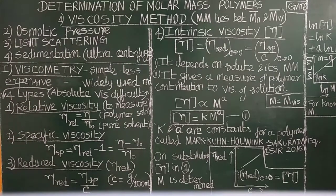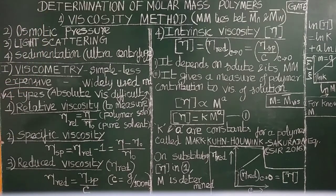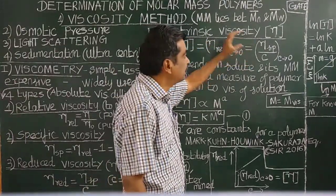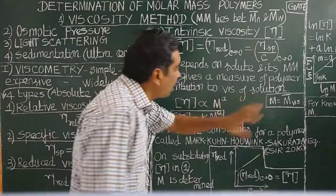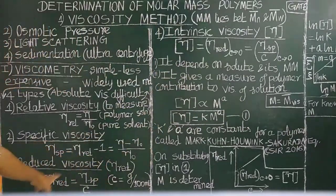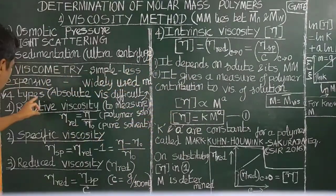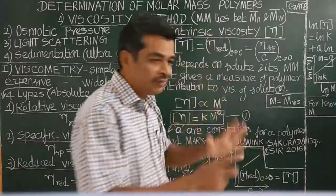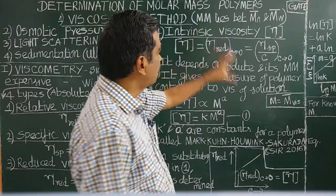What are the four types of viscosities? Relative viscosity, specific viscosity, reduced viscosity, and intrinsic viscosity. This intrinsic viscosity is related to molar mass of the polymer, so the intrinsic viscosity is very important for the determination of molar mass of polymers.